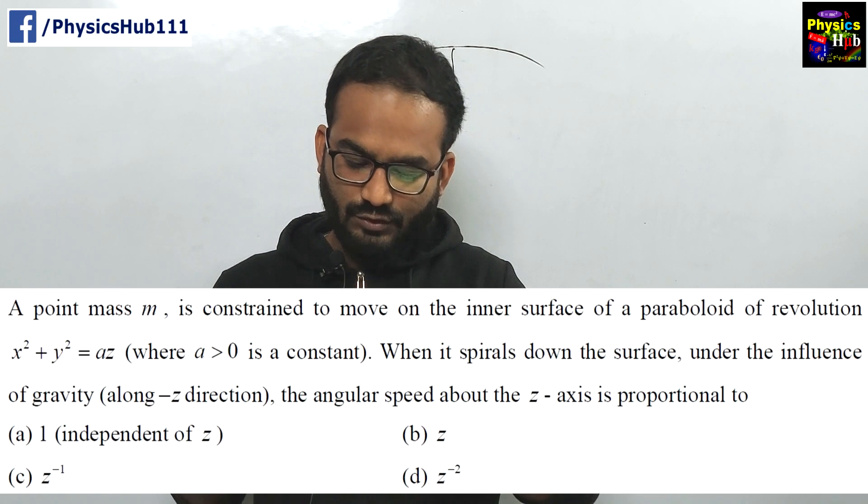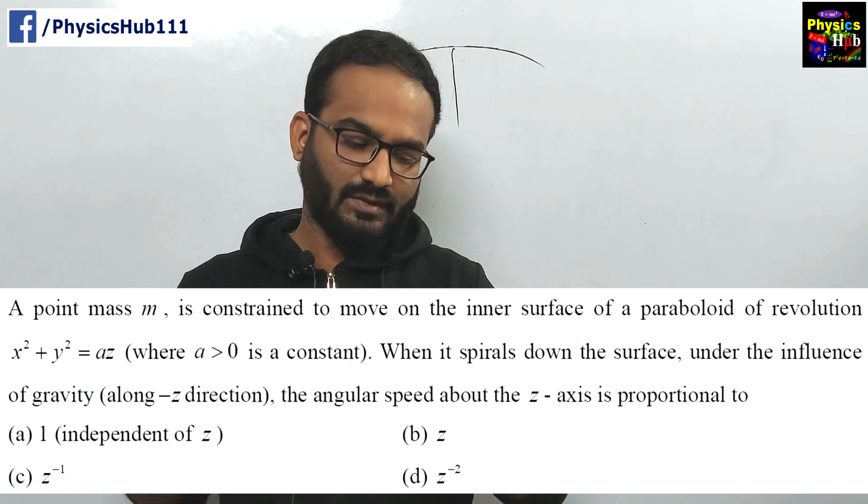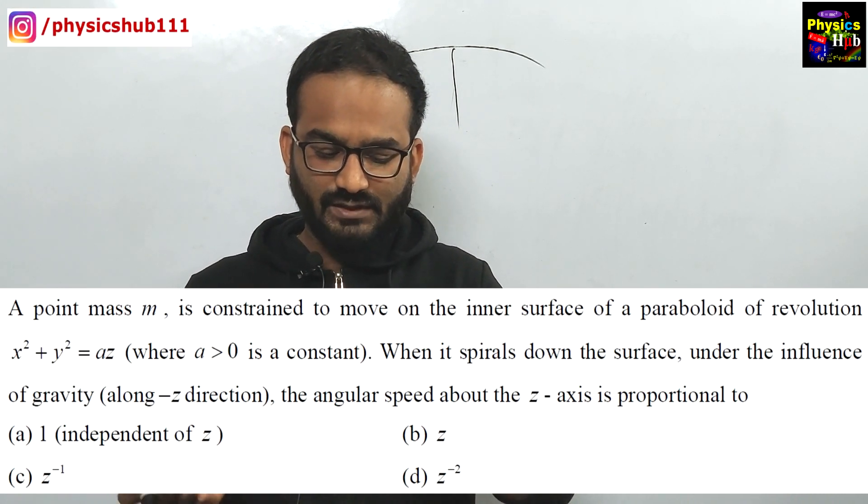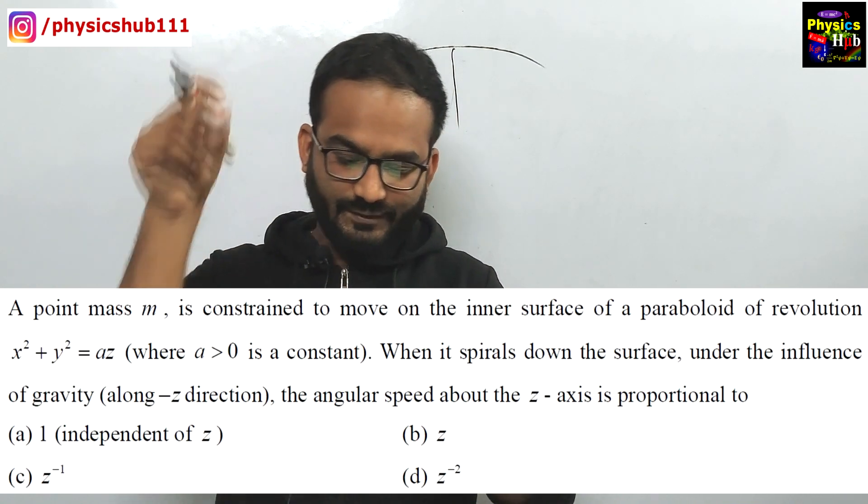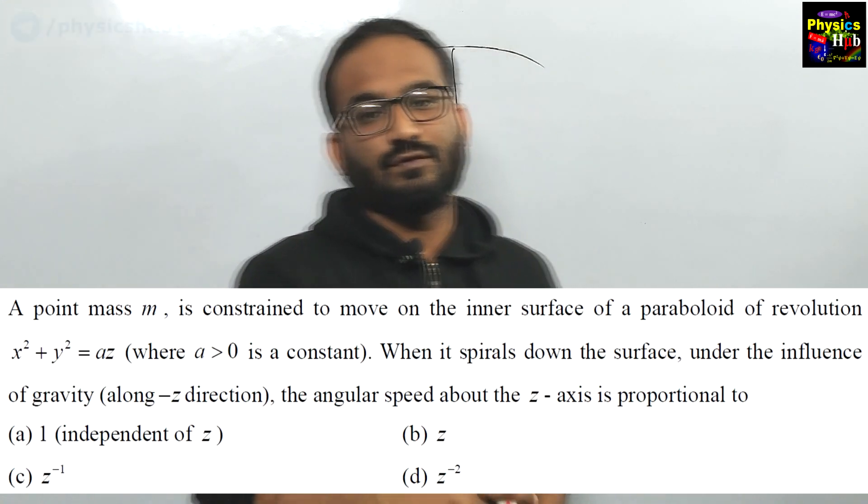The point mass m is constrained to move on the inner surface of a paraboloid of revolution x square plus y square equals to az where a is greater than 0 is a constant. When it spirals down the surface under the influence of gravity along the negative z direction, the angular speed about the z axis is proportional to, and you are given four options.